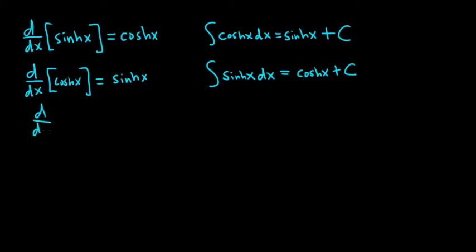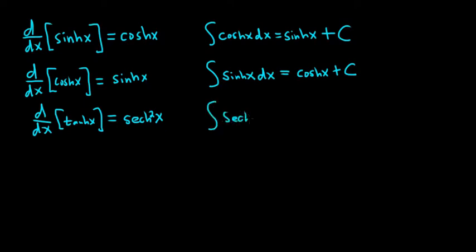If you take the derivative of the hyperbolic tangent of x, you get the hyperbolic secant squared of x. Very similar to what you see with trig functions — the derivative of tangent is secant squared. That means if you integrate the hyperbolic secant squared with respect to x, you end up with the hyperbolic tangent of x plus a constant.